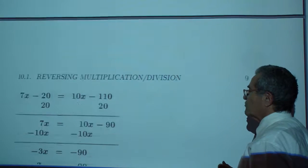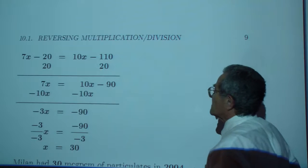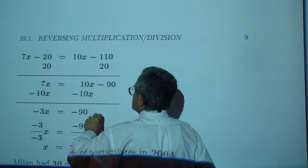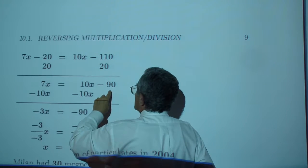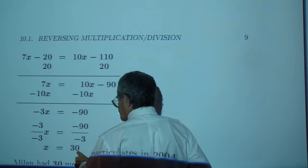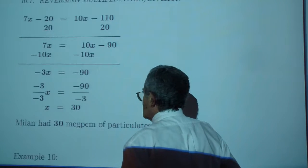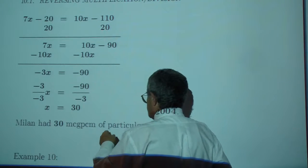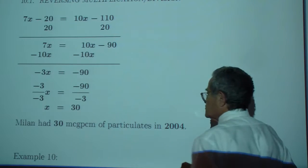And now the equation. 7X minus 20 is 10X minus 110. Add 20 to both sides. Subtract 10X from both sides. Divide by negative 3. X is equal to 30. Milan had 30 MCG per cubic meter of particulates in 2004.